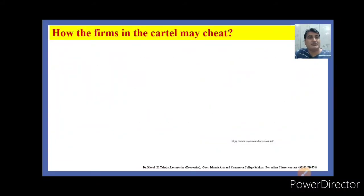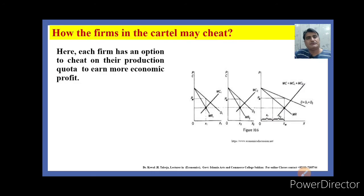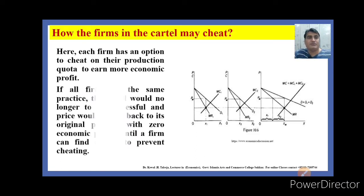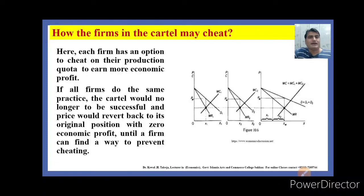How can firms in the cartel cheat? Each firm has an option to cheat on their production quota to earn more economic profit. Firm A may produce more than firm B. If all firms do the same practice and increase their output in order to earn more economic profit, the cartel would no longer be successful. The price would revert back to its original position with zero economic profit until a firm can find a way to prevent cheating.